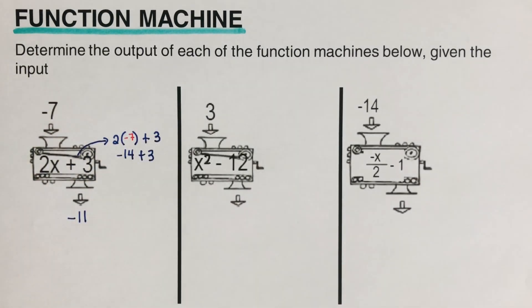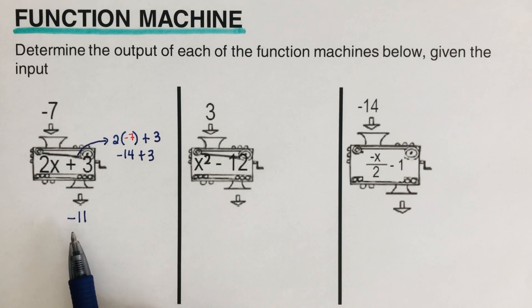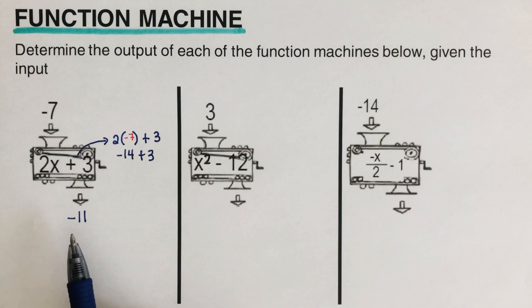Therefore, this machine is a function machine because it has produced only one unique output, which is negative 11.